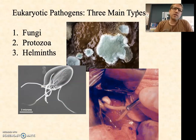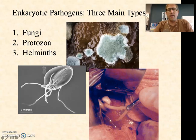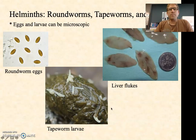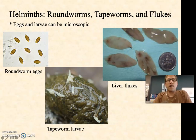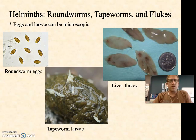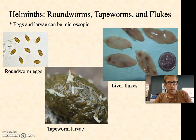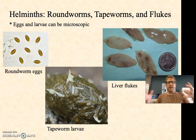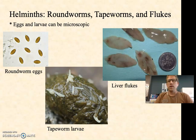Let's put this back in context. We're talking about the three main types of eukaryotic pathogens: we had a video on fungi, a video on protozoa, and now we're going to talk about the helminths. The helminths we think of as the roundworms, the tapeworms, and the flukes. In the adult form they're macroscopic — very large — but in the larval form the larvae are sometimes microscopic, and the eggs are always microscopic. It's the larvae and the eggs that get transmitted, which is why this falls under microbiology.